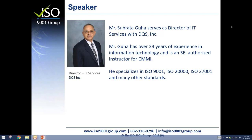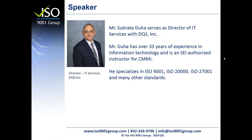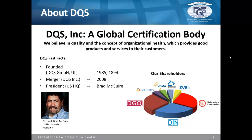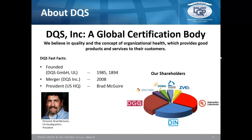Thank you, Victoria, for the introduction, and welcome all in this webinar. Today's subject is Ransomware for Document Control. Before we get started, I want to give a quick introduction about our company. Our company name is DQS, Inc. We are a global certification body. DQS is formed by a group of shareholders — DGQ, which stands for German Association for Quality, equivalent to ASQ in America; Underwriters Laboratory, which is UL; and DIN, a major standard publishing company in Germany.